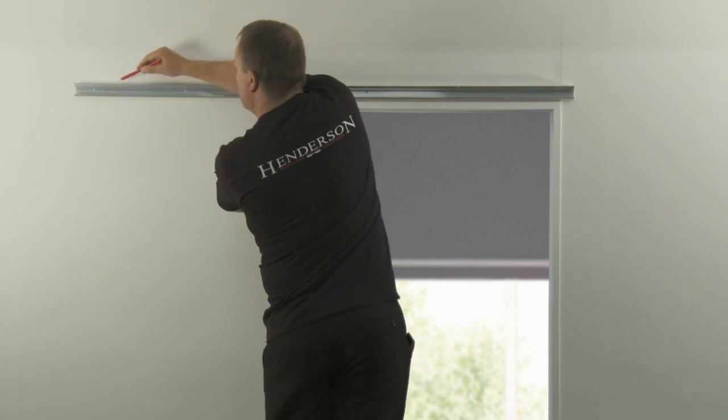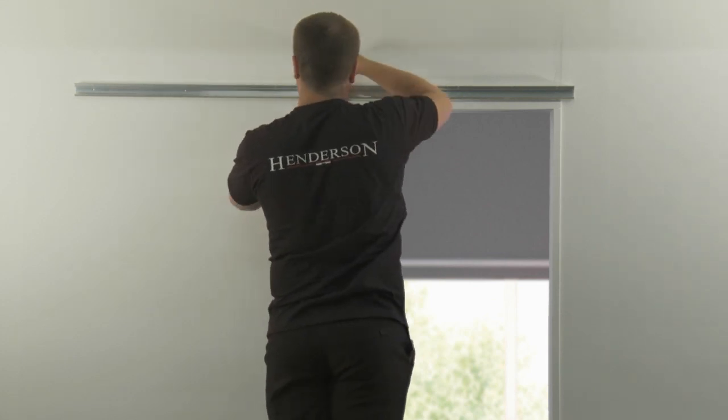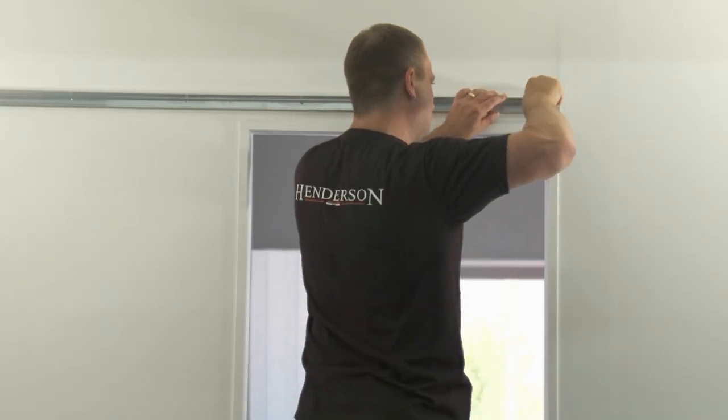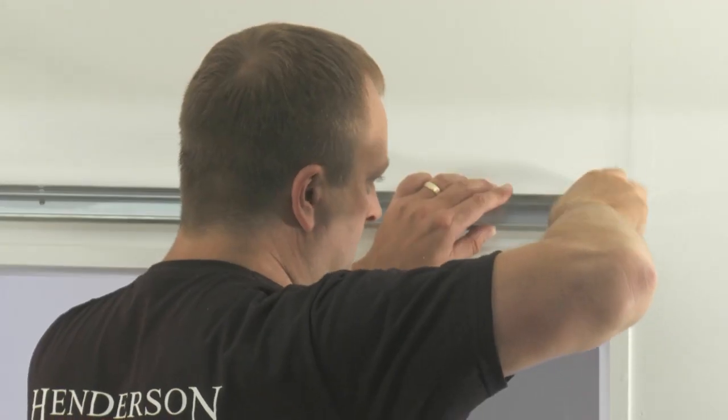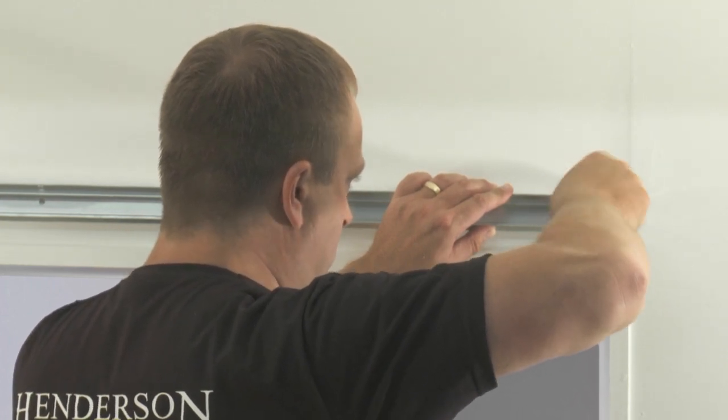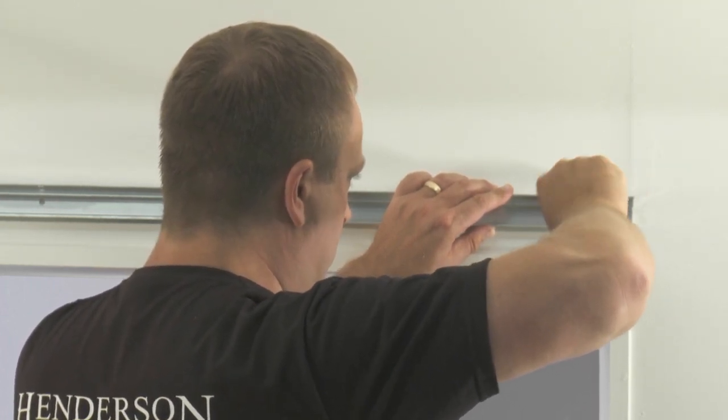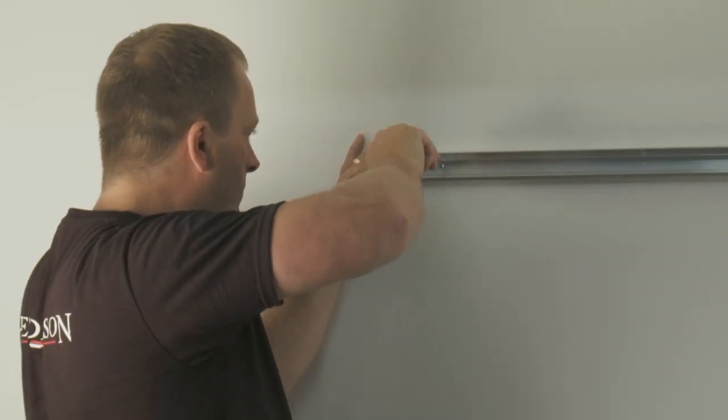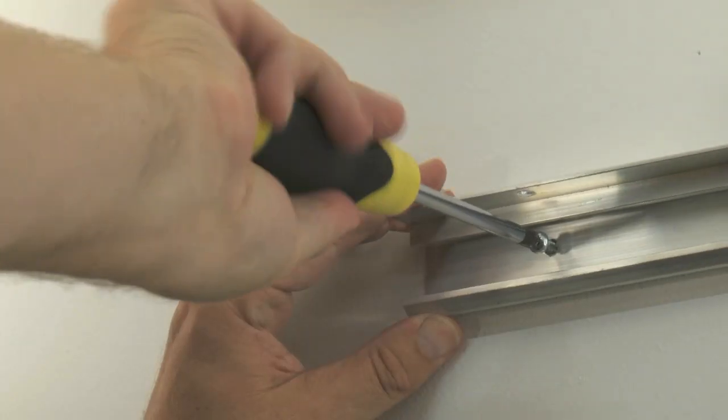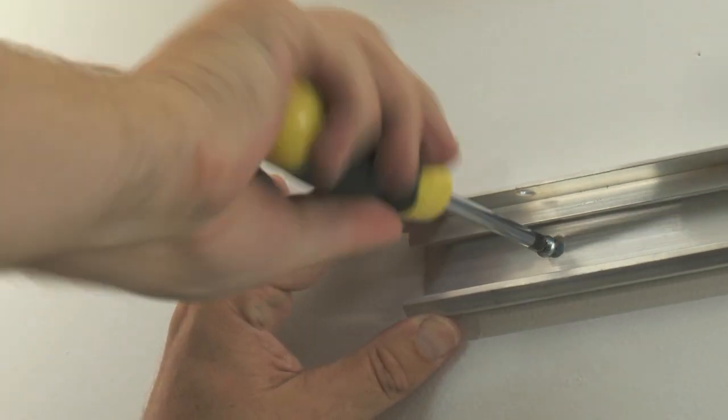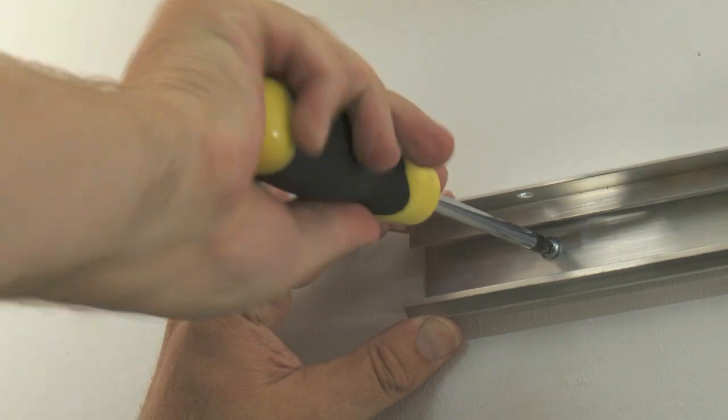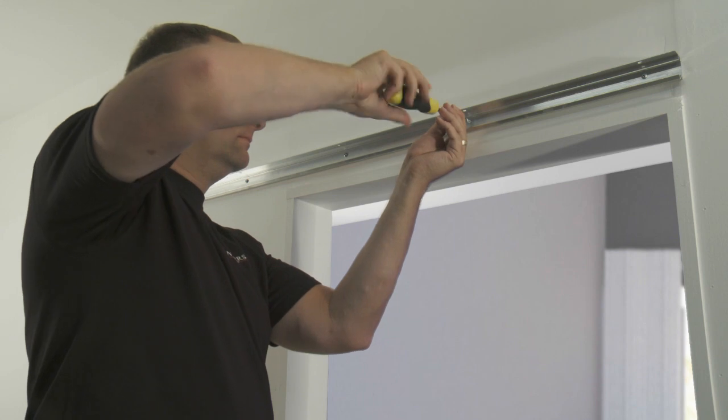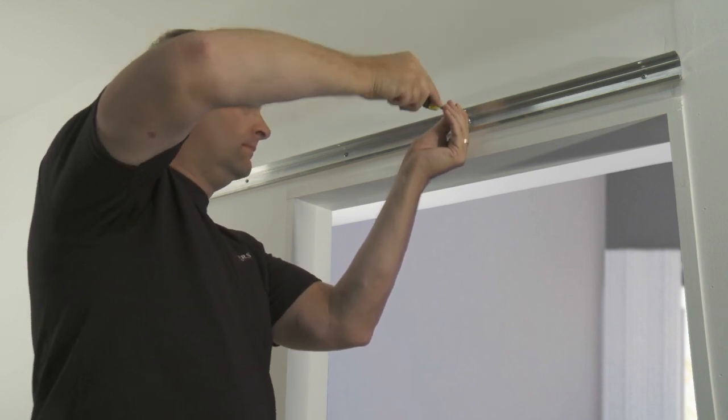Using a pencil, draw a line along the top of the full length of the track. Holding the track firmly in place, screw the first track fixing into the wall. Check the track level again and screw the second wall fixing in place at the opposite end of the track. Once you are happy that the track is still level, use the other screws to secure the track in place.